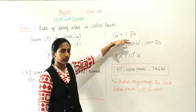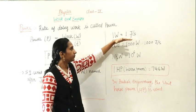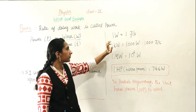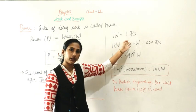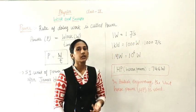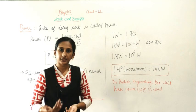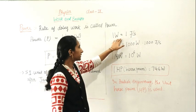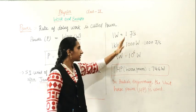For competitive exam students, you can find such type of questions: what is 1 Watt? It may be given as Joule per second or Joule per second squared. So you should know this: 1 Watt is Joule per second.